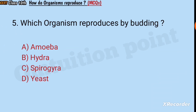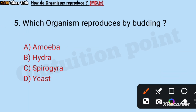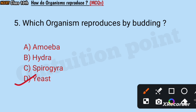Question number five: Which organism reproduces by budding? Amoeba, hydra, spirogyra, or yeast? Answer: Yeast.